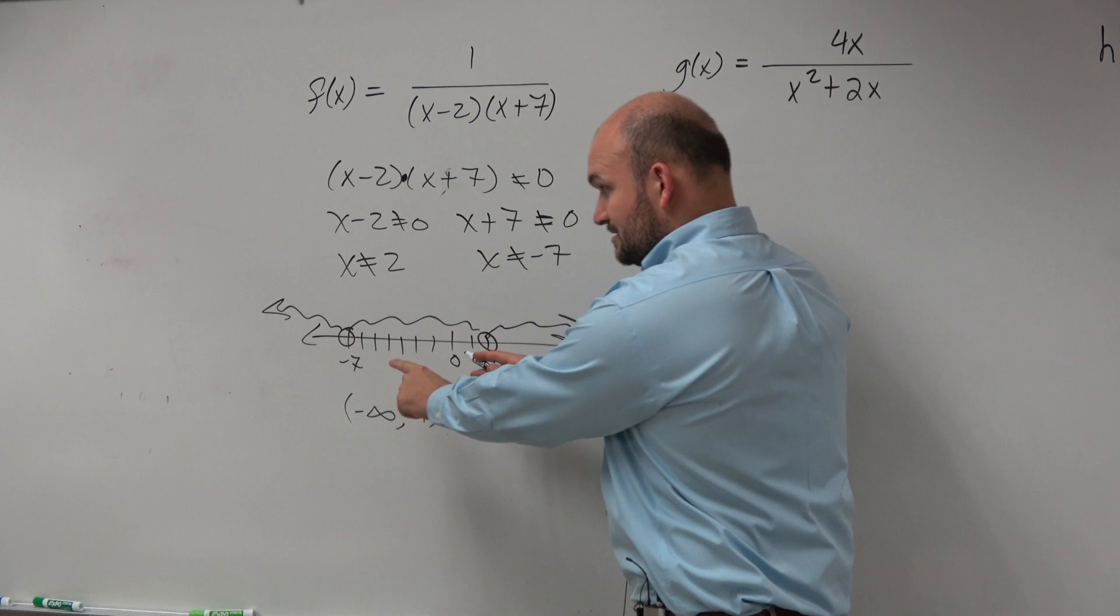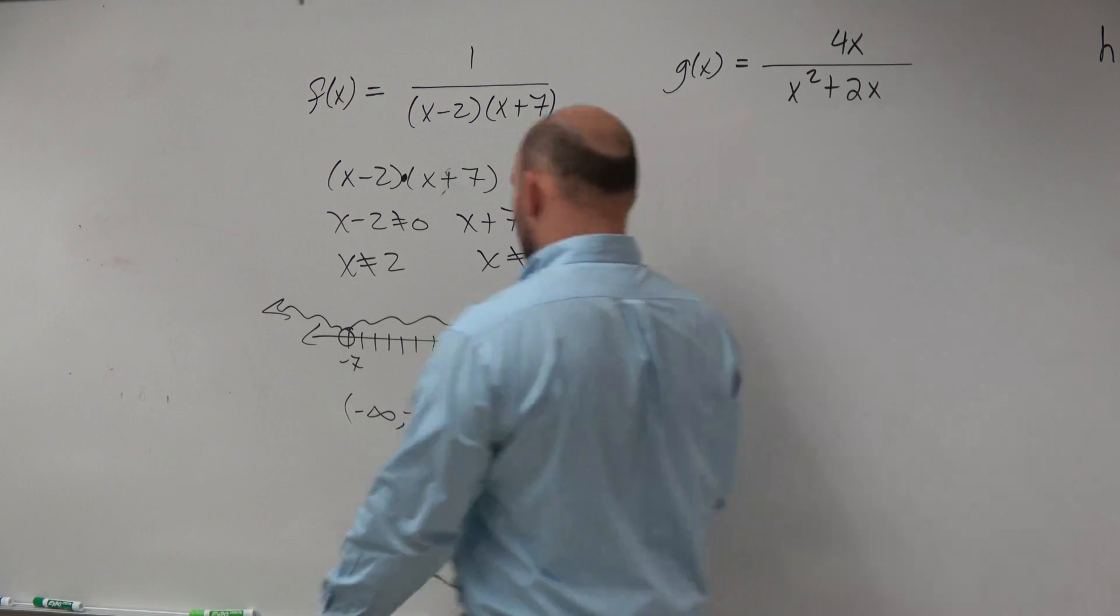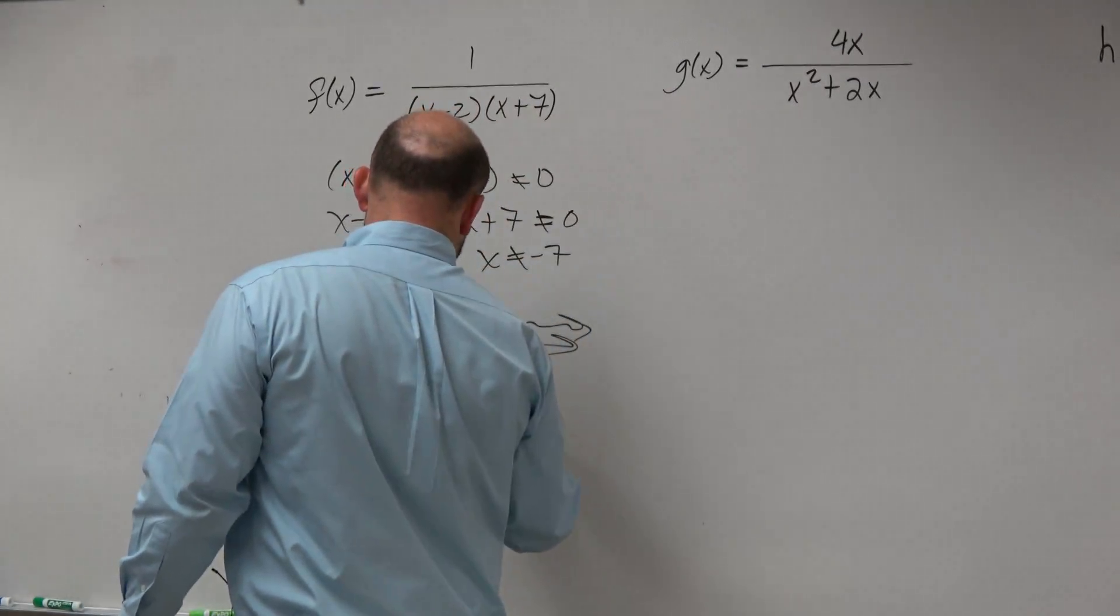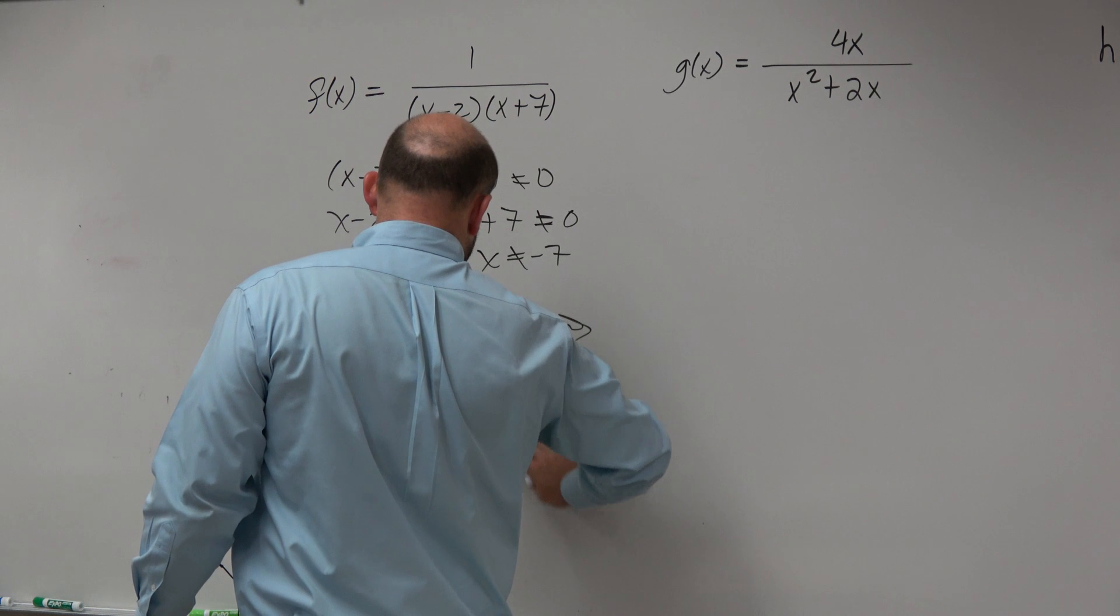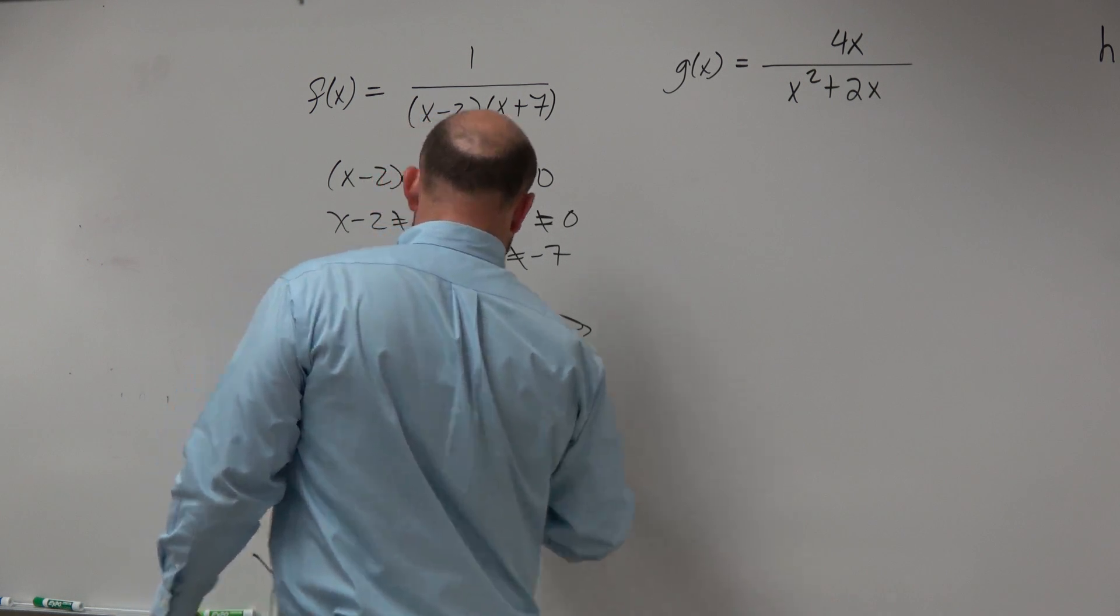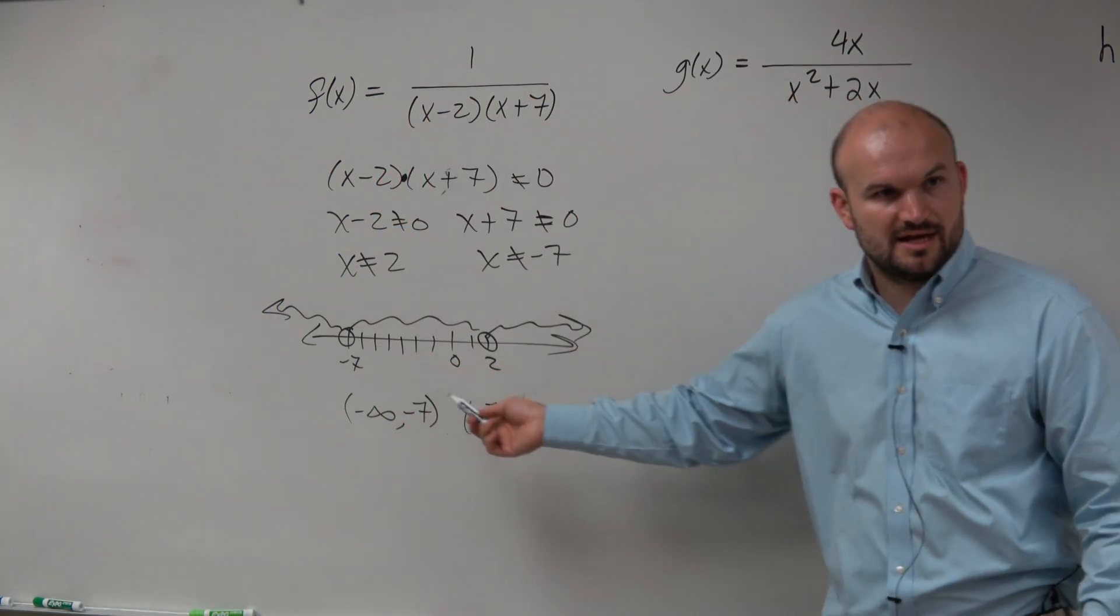Then we have the center interval. The center interval is just negative 7 to 2. Right? Do you guys agree? That's the next kind of interval.